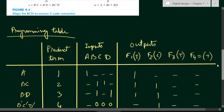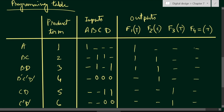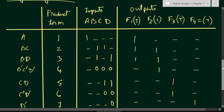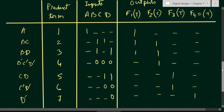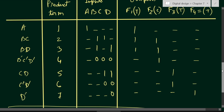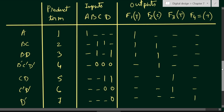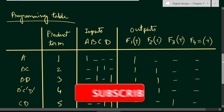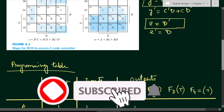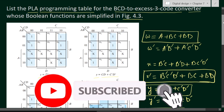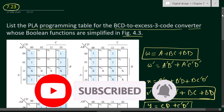This is the programming table considering the simplified terms from figure 4.3. This is the programming table of the PLA, Programmable Logic Array. Thank you for watching. If you have any questions, please put them in the comment section below. Also like, share, and subscribe to my channel.